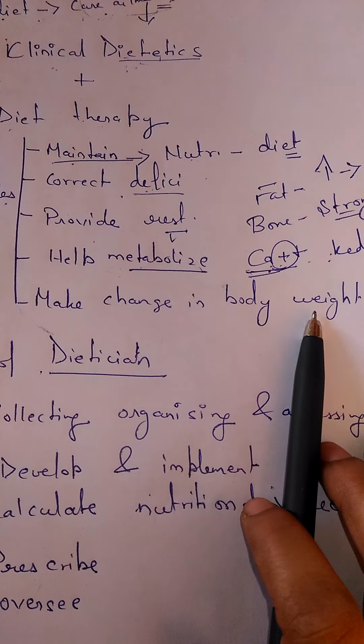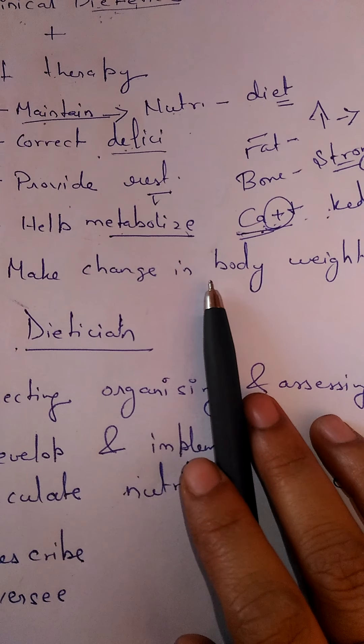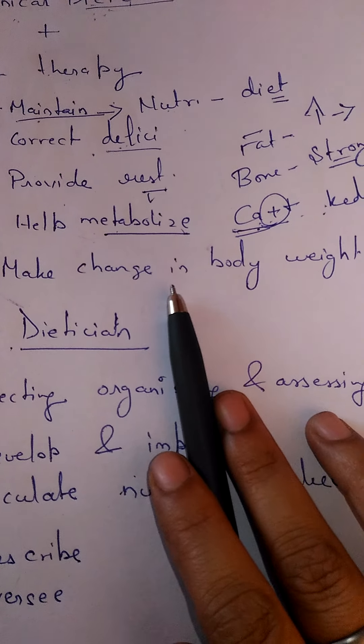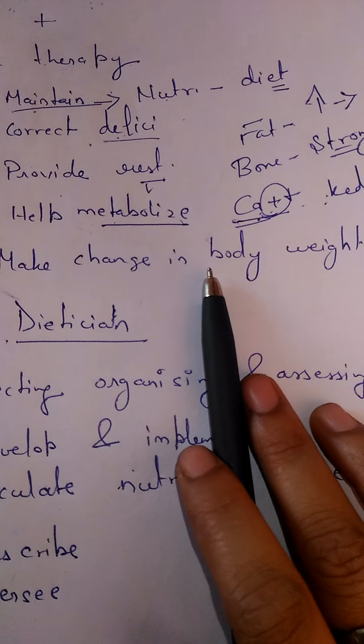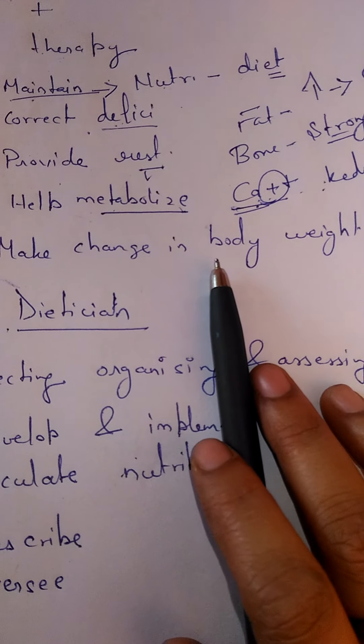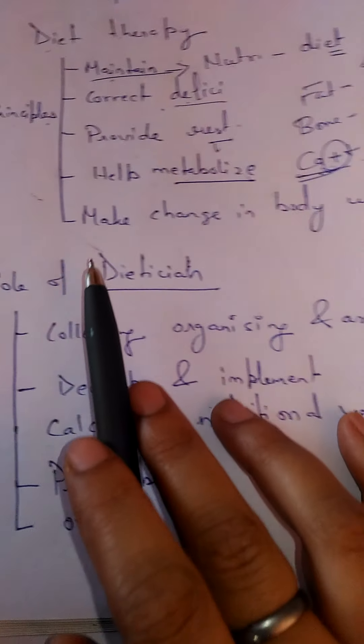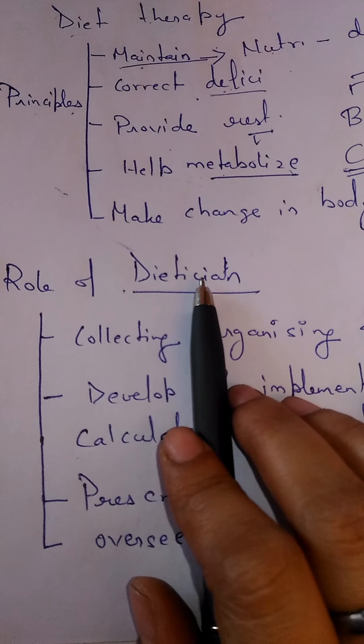Then after that, make changes in body weight. If you're finding your body to be lean, at that time you have to follow the proper diet which is going to make your body look healthy. And if you're having excess fat, at that time you should follow such a diet which is going to make your body fit and fine. Now the next page, we just encounter the term dietitian.